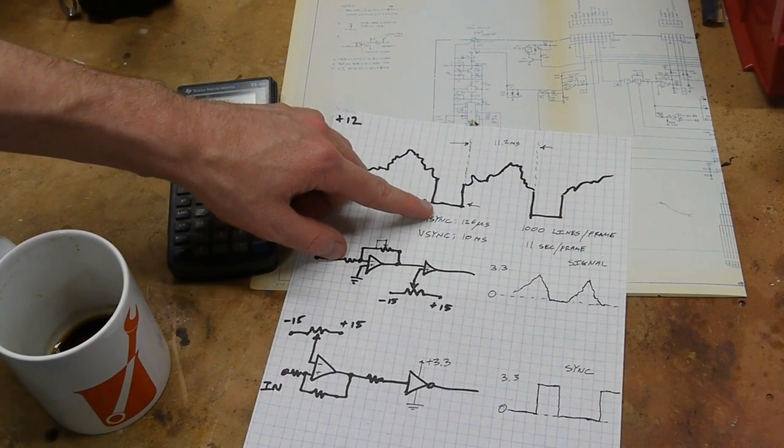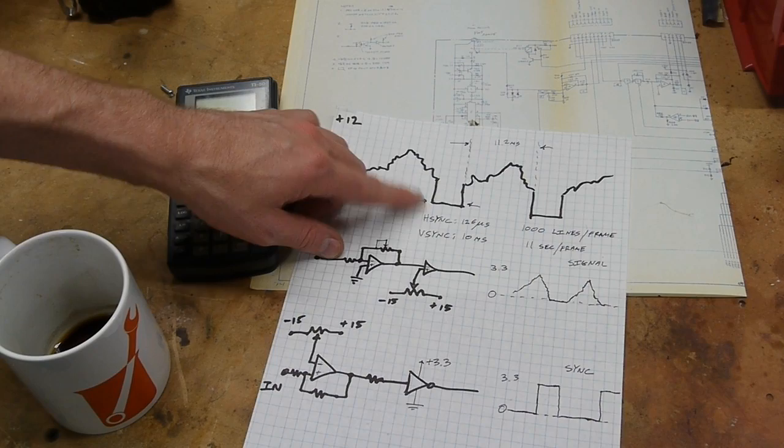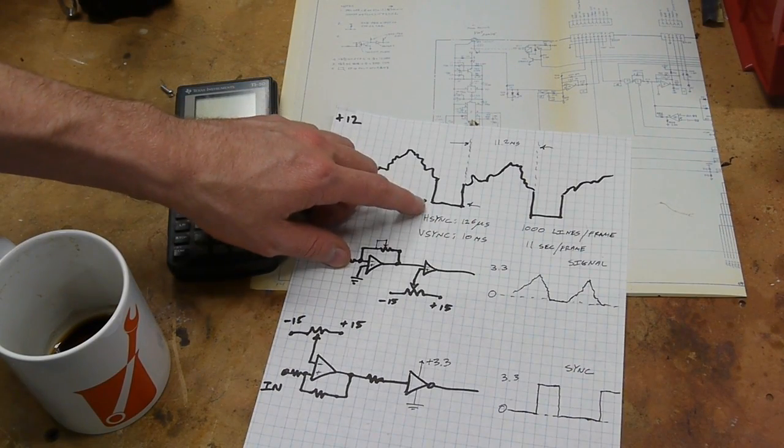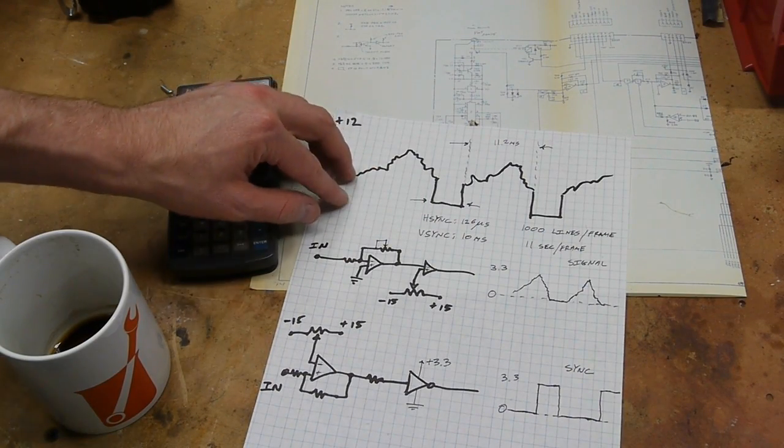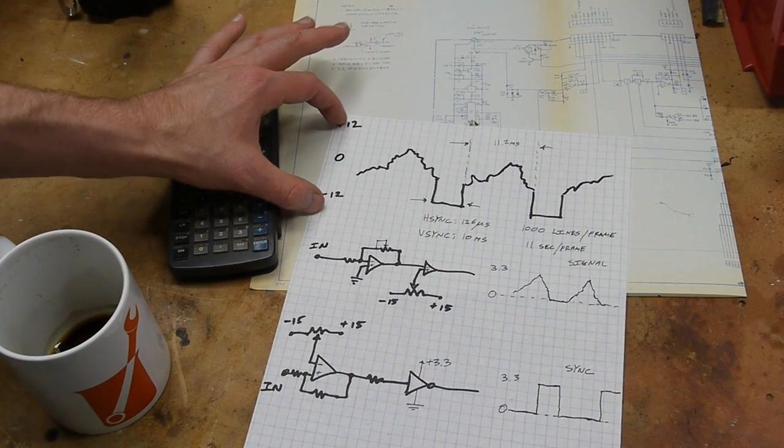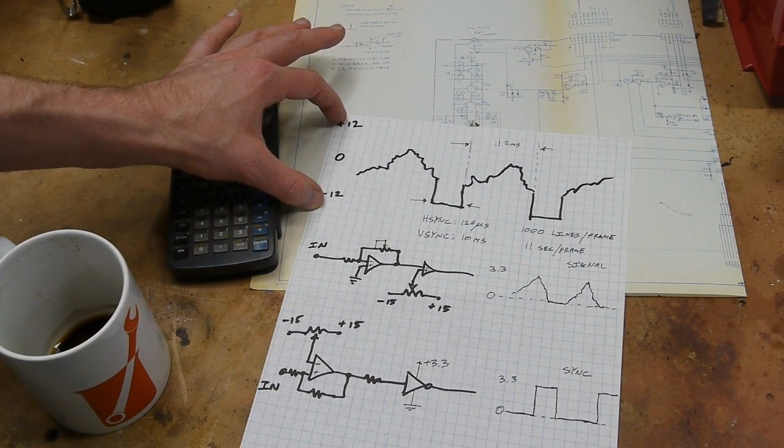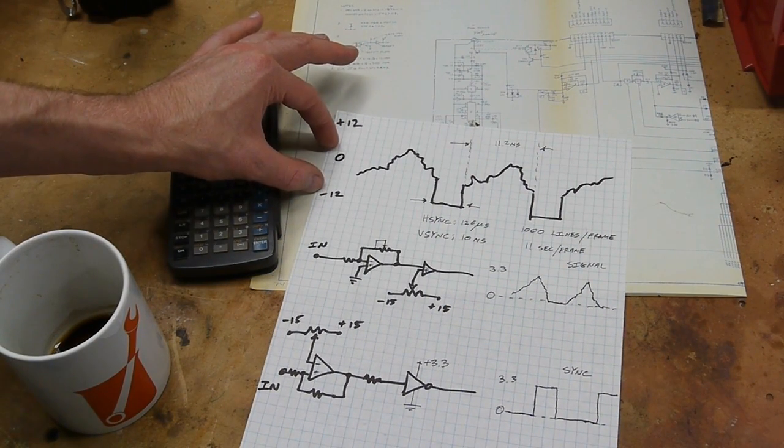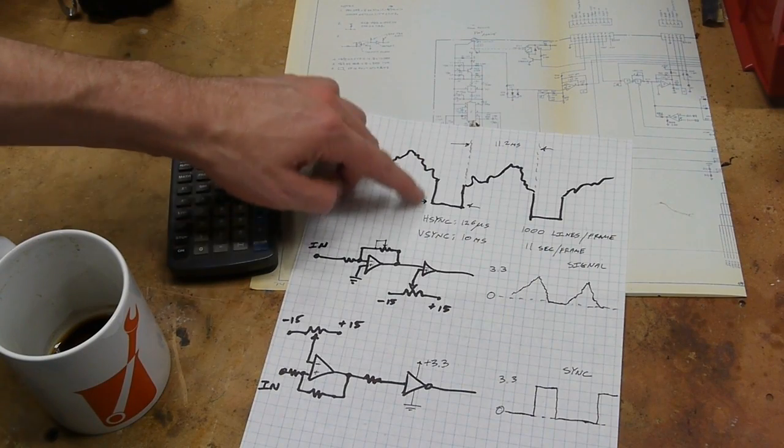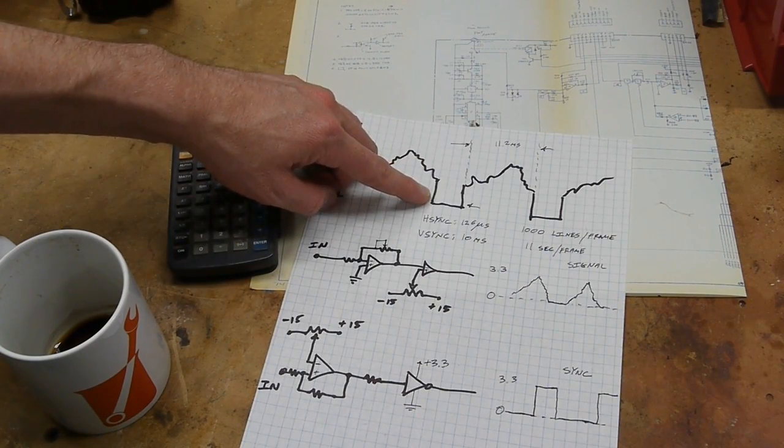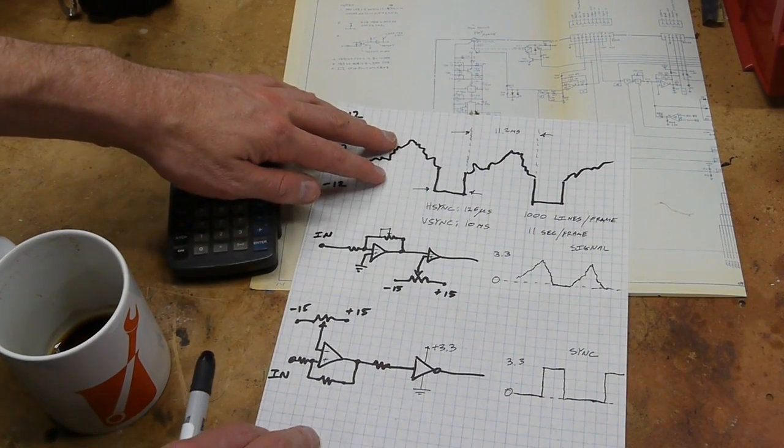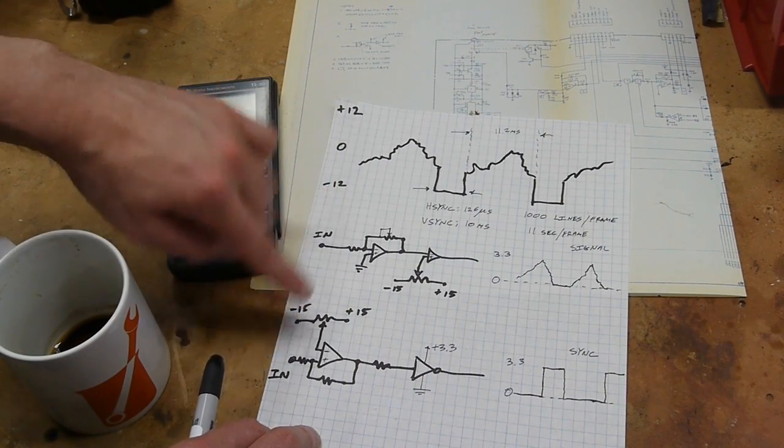These sync pulses don't really carry any information about the image itself—it's timing information but not visual information. So if we were to compress this whole negative 12 to 12 range down to 0 to 3.3, a lot of our dynamic range would be wasted on this pulse. What I'm going to do is separate the signal into just video and then just sync.